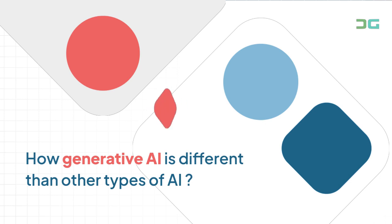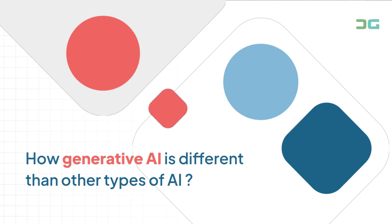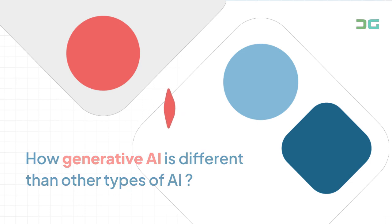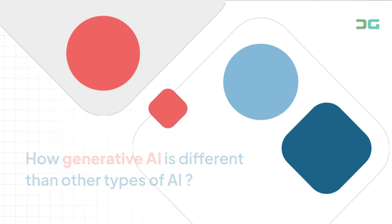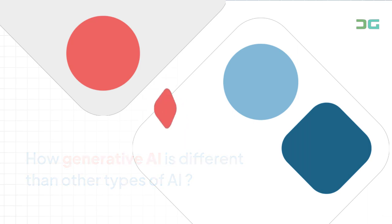These other types of AI may still generate content, but they do it as a side effect of their primary function. Generative AI is specifically designed to generate new content as its primary output — whether this is text, images, product suggestions, whatever. That's what generative AI is designed to do.